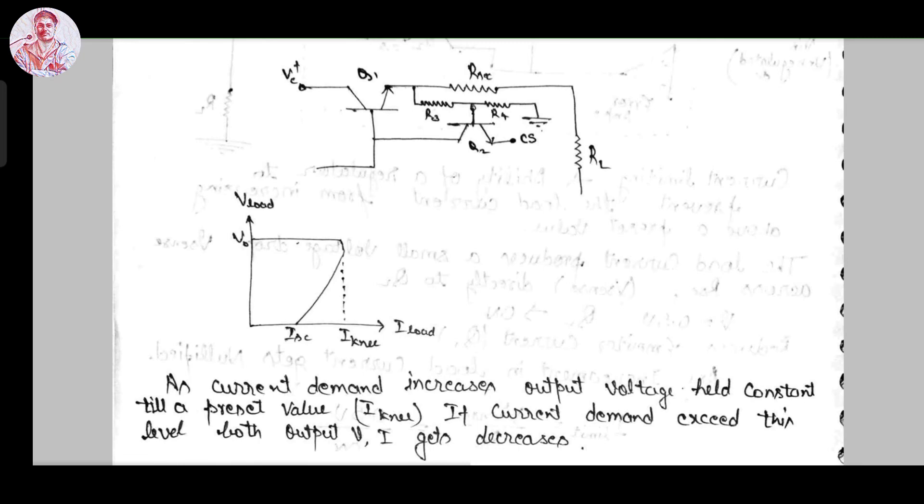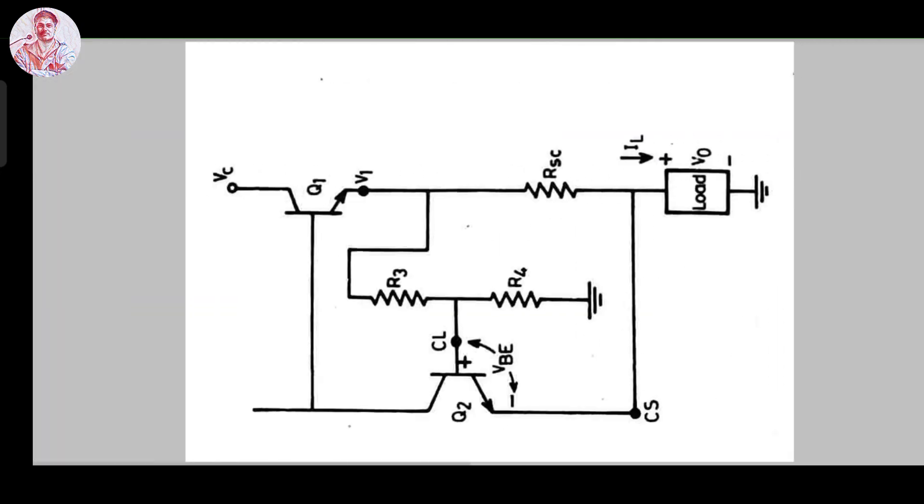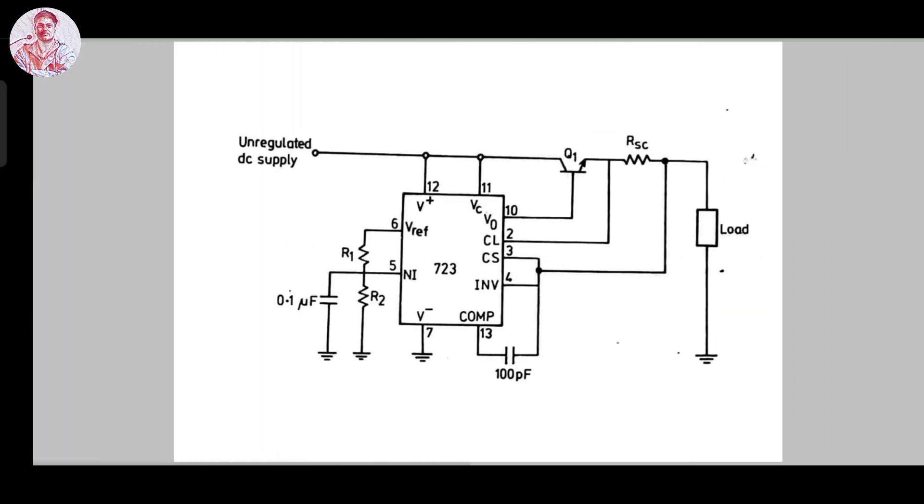Now the output we get at the output of IC723 series voltage regulator is about 150 milliamperes, which is not sufficient for various applications. We need to boost this current. For boosting, we will add an external series pass transistor Q1 here between the R sense and V0.